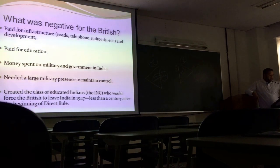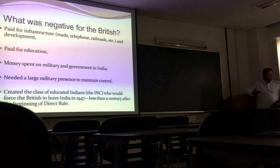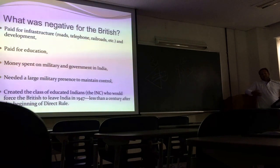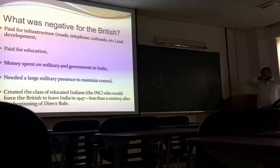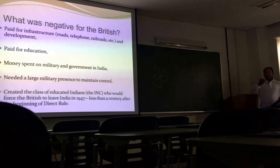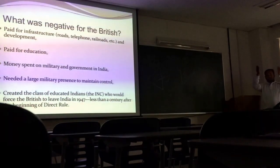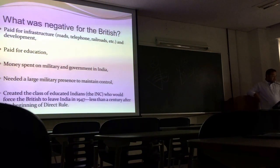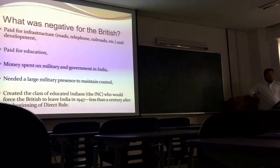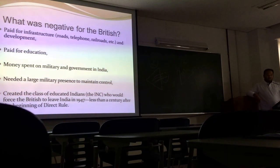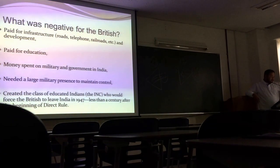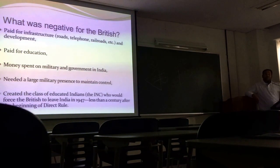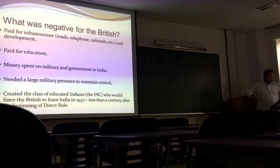What was negative for the British? They paid for infrastructure — roads, telephone, railroads. They paid for education. Money was spent on military and government in India. The British first showed us the gun — before we had the sword. They needed a large military presence to maintain control over such a huge land. In 1947, they had created a class of educated Indians — the INC — who would force the British to leave India in 1947, less than a century after the beginning of direct rule.